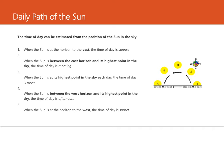The time of day can be estimated from the position of the Sun in the sky. Number one: when the Sun is at the horizon to the east, the time of day is sunrise. Number two: when the Sun is between the east horizon and its highest point in the sky, the time of day is morning. Number three: when the Sun is at its highest point in the sky each day, the time of day is noon. Number four: when the Sun is between the western horizon and its highest point in the sky, the time of day is afternoon. Number five: when the Sun is at the bottom of the horizon to the west, the time of day is sunset.